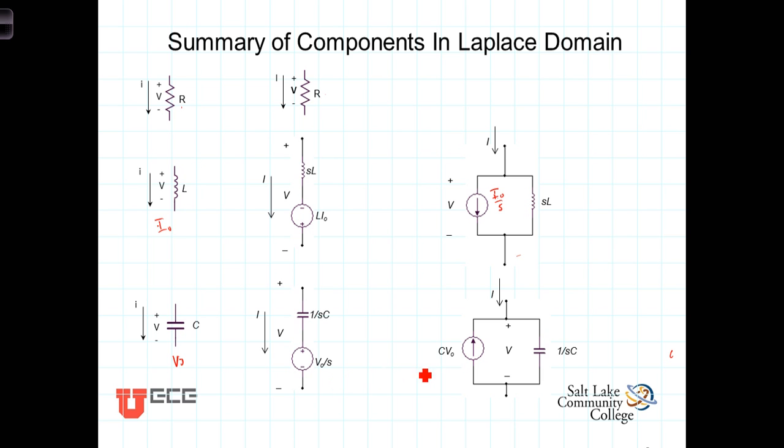Or through a source transformation, we can then replace this with a parallel representation with a current source equal to C times V0 and a parallel impedance 1 over SC.